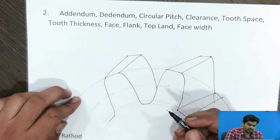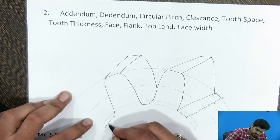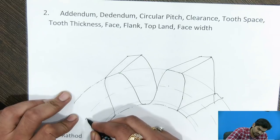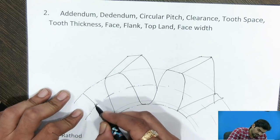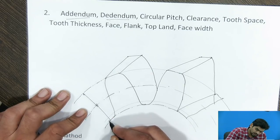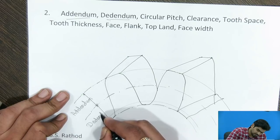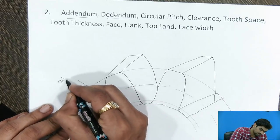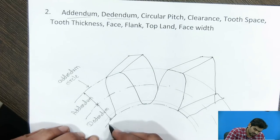First one is addendum. Addendum is nothing but the radial distance from the pitch circle to the top of the teeth. The circle drawn from the bottom of the teeth and the circle drawn from the top of the teeth are shown, with the pitch circle in between where pure rolling action occurs. So addendum is the radial distance from the top of the teeth to the pitch circle. Dedendum is the radial distance from the pitch circle to the bottom of the teeth. The circle drawn from the top of the teeth is the addendum circle, and the circle drawn from the bottom of the teeth is the dedendum circle.